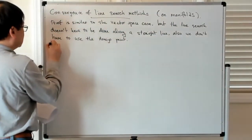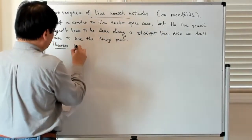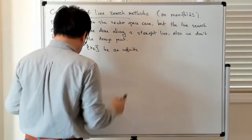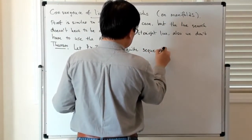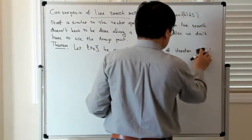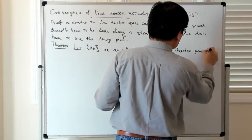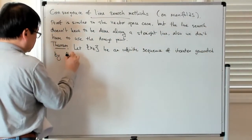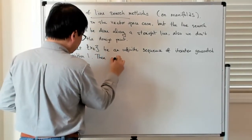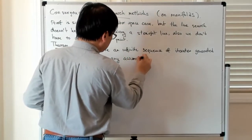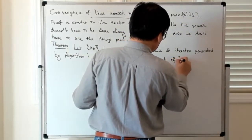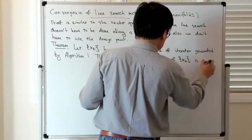Okay, so let's state the theorem. The theorem is that, let's say we have an infinite sequence of iterates generated by the algorithm which we had presented. Then the claim is that any accumulation point of x_k is a critical point of the cost function.